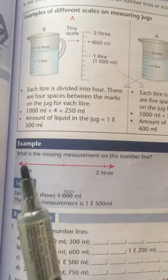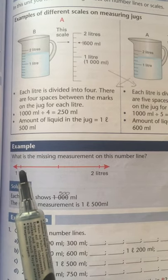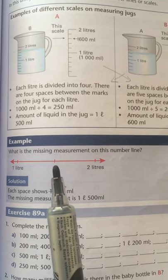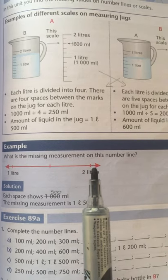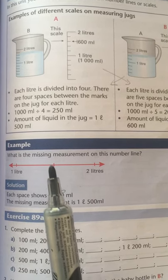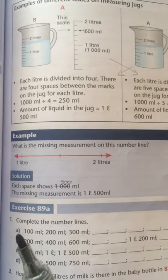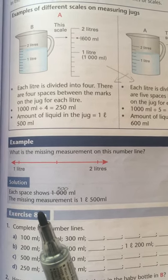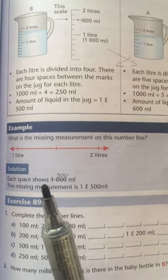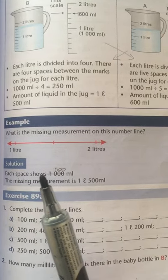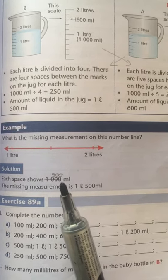You can also look at the example over here. There's one liter then there's another line and then there's two liters. So we need to figure out what is halfway between one liter and two liter. It is one and a half liter. So it says here each space shows a thousand milliliters. That's wrong.